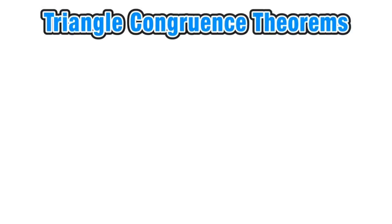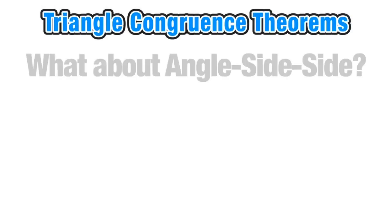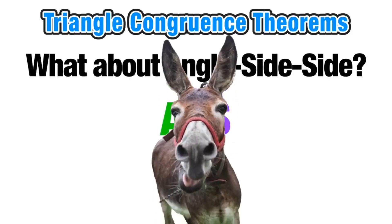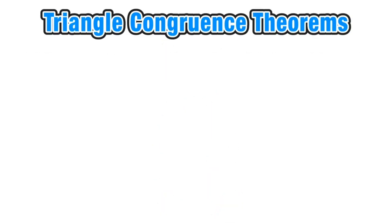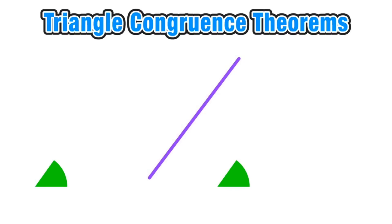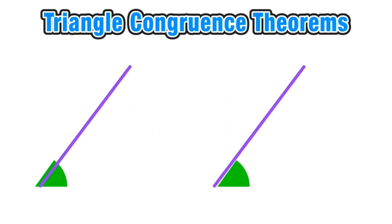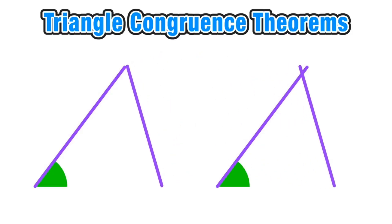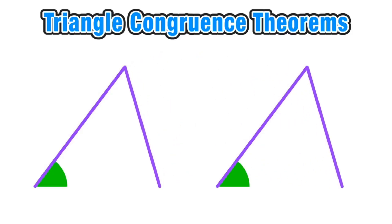Now that we've covered the five triangle congruence theorems, you may be asking: what about Angle-Side-Side? Let's explore why Angle-Side-Side would not work as a triangle congruence theorem. If we have a set of corresponding congruent angles and two consecutive pairs of corresponding congruent sides — an angle followed by two consecutive congruent sides — we run into a problem.